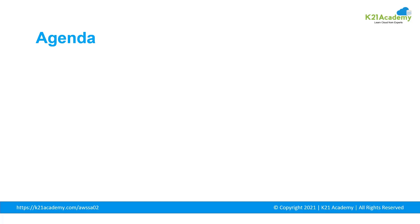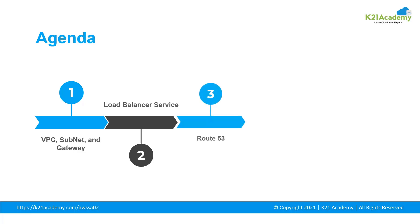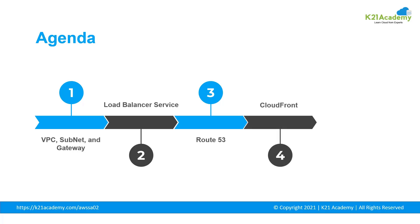Let us take a quick glance at the agenda. Firstly, we will be discussing about Virtual Private Cloud and its related components. Post that, we will be looking into Load Balancer under Networking. And then we will discuss about Route 53, which is Domain Name Service. Post that, we will discuss about Amazon CloudFront, which is Content Delivery Network. And then we will discuss about AWS Direct Connect.